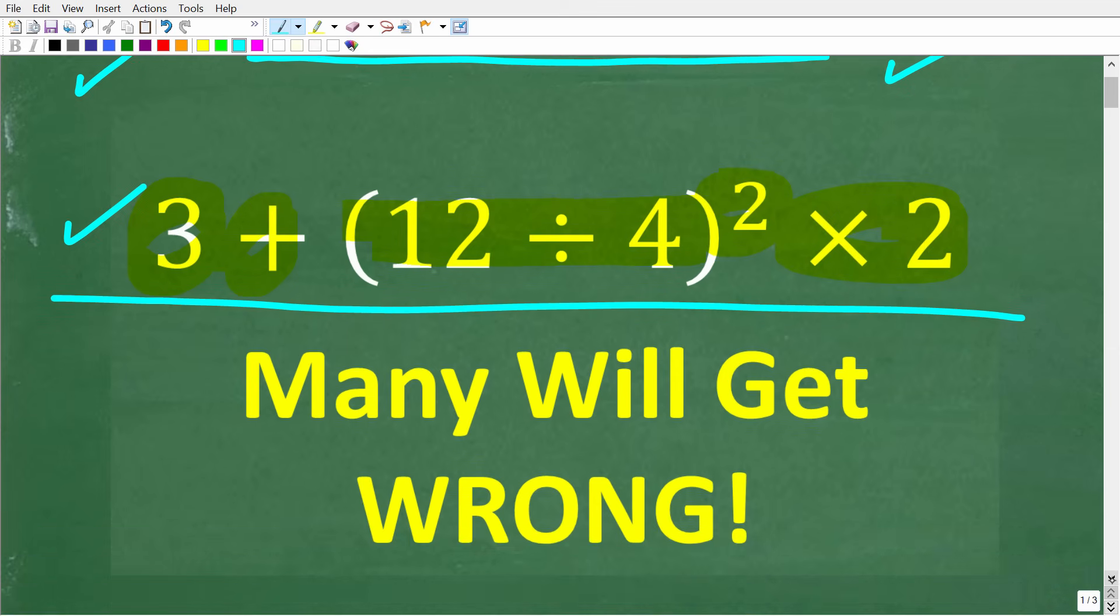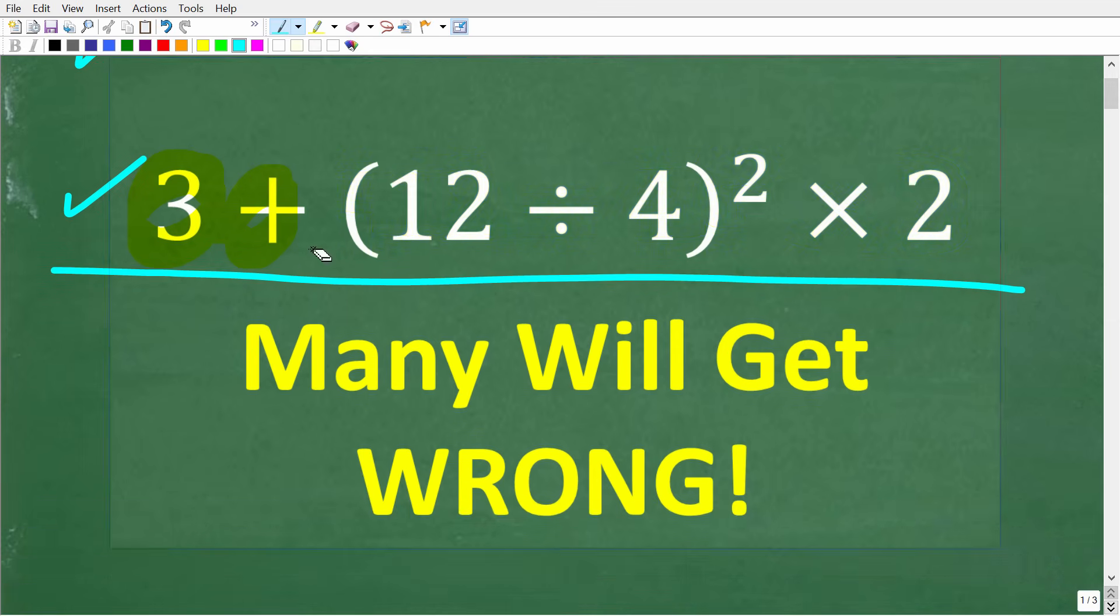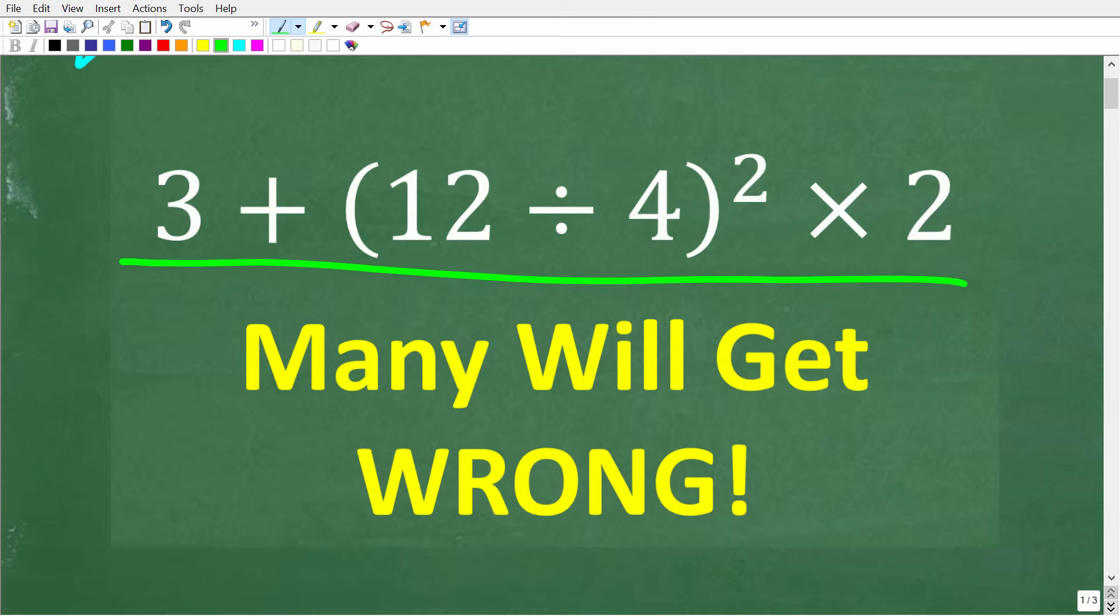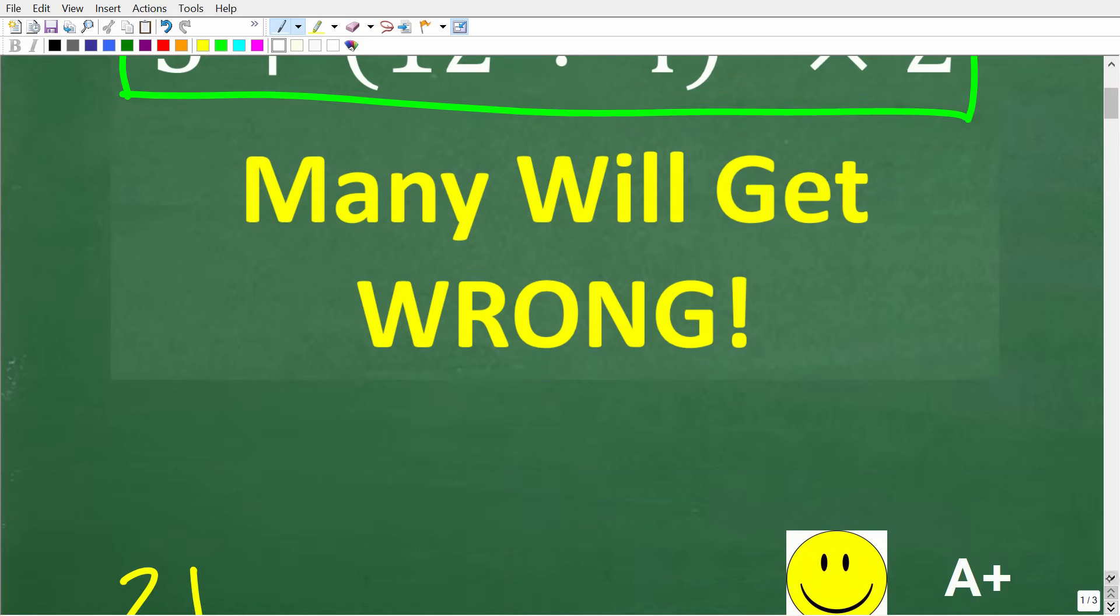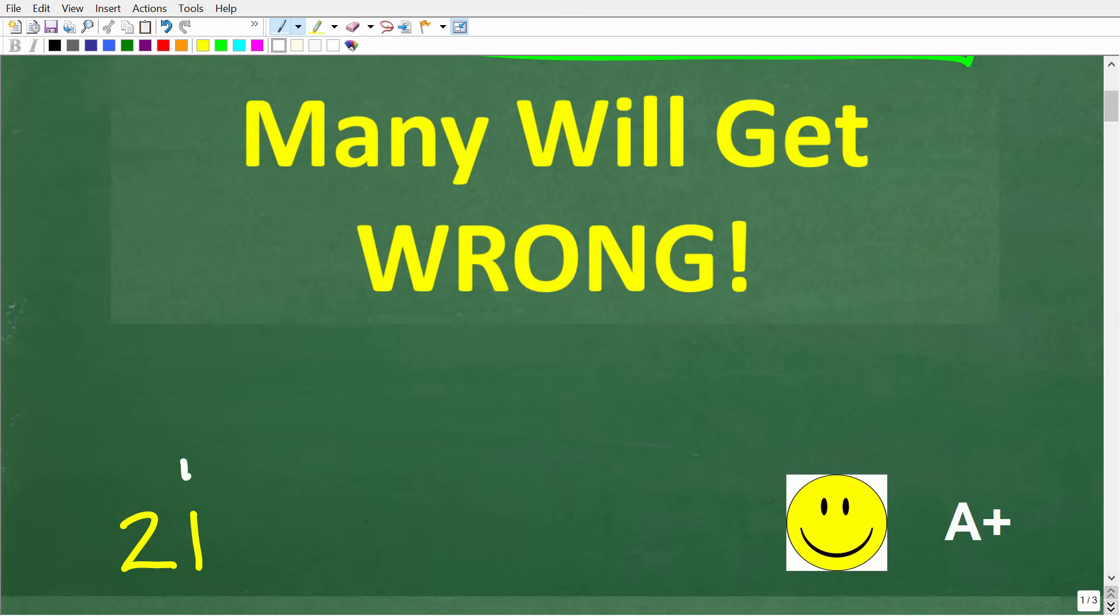Okay, now back to this problem. Now, assuming you know how to add, divide, and multiply simple numbers, the key here is doing this problem in the correct order. So you really need to know something about the order of operations. Okay, so let's take a look at the correct solution here. The right answer is 21.